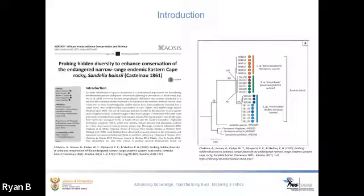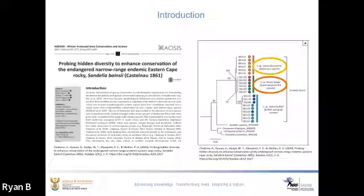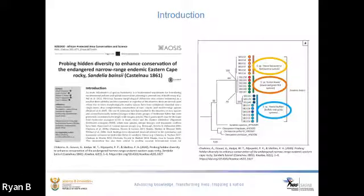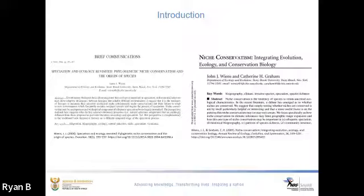Recent molecular studies have revealed the occurrence of three divergent lineages within Sandelia benzae: Sandelia benzae kiskama occurring in the Kiskama River, Sandelia benzae kowei occurring in the Kowei and Great Fish River system, and Sandelia benzae buffalo confined to the Buffalo and Amathole systems. These lineages represent closely related taxa that occur in allopatry. Studies have shown that congeneric allopatric species occurring in similar environments are likely to exhibit similar trophic niche patterns due to niche conservatism.